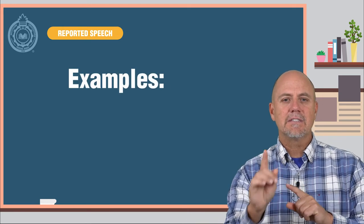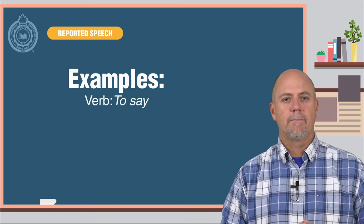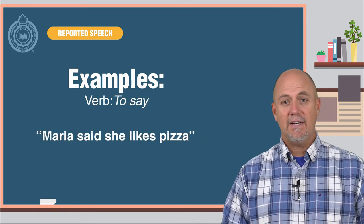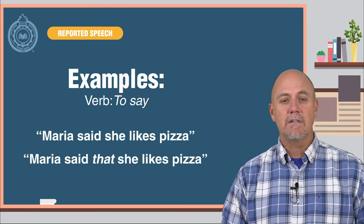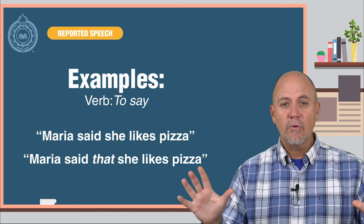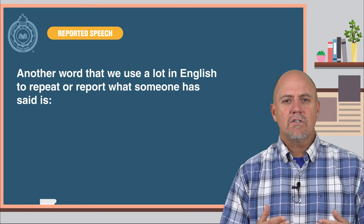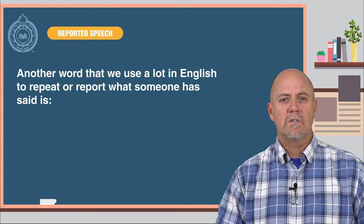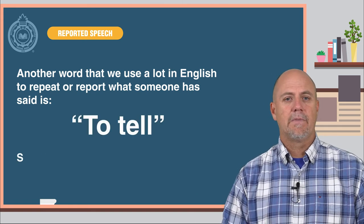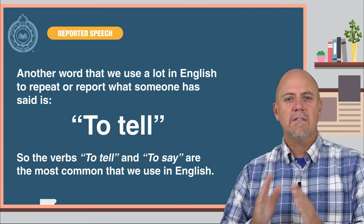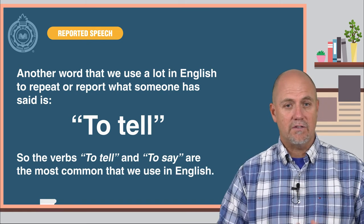You can use it if you want or leave it out. Let's look at some examples in English with the verb to say: Maria said she likes pizza, or Maria said that she likes pizza — either way is fine. Another word we use a lot in English to report what someone has said is to tell. So the verbs to tell and to say are the most common that we use in English.